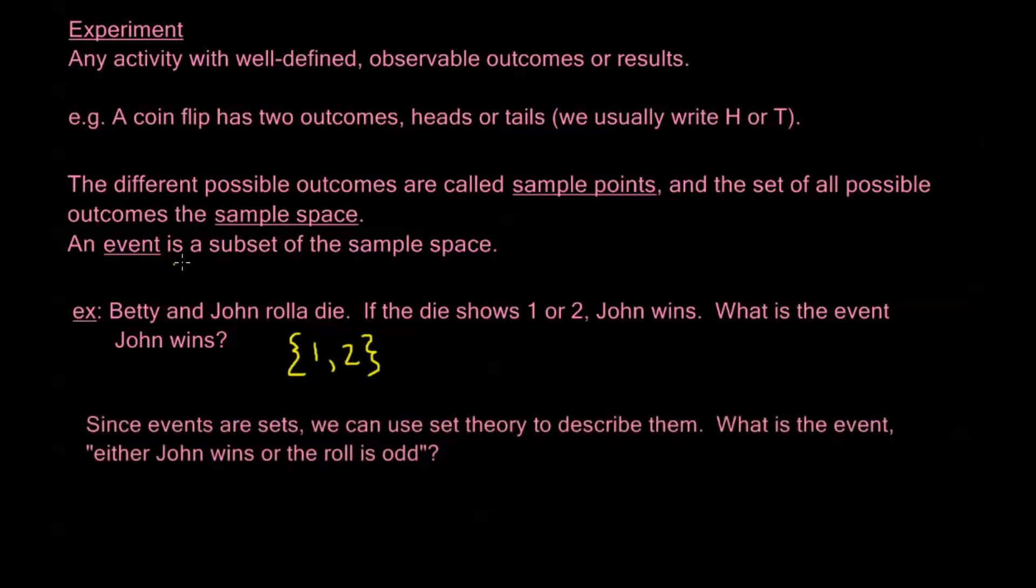Now since events are sets, we can use set theory to describe them. So for example, what is the event either John wins or the roll is odd? Well, the event that John wins, we just found to be {1, 2}. And the event that the roll is odd is {1, 3, 5}. So these are sets. So if we want to talk about the event that either one set or the other set, we know that that's just the union, isn't it?